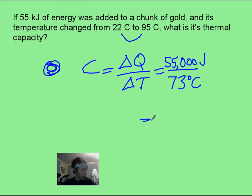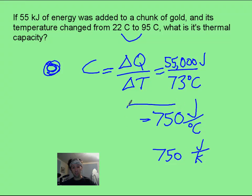Then, we do the math and we get about 750 joules per degree Celsius. You could also call it 750 joules per Kelvin. It would mean the same thing.